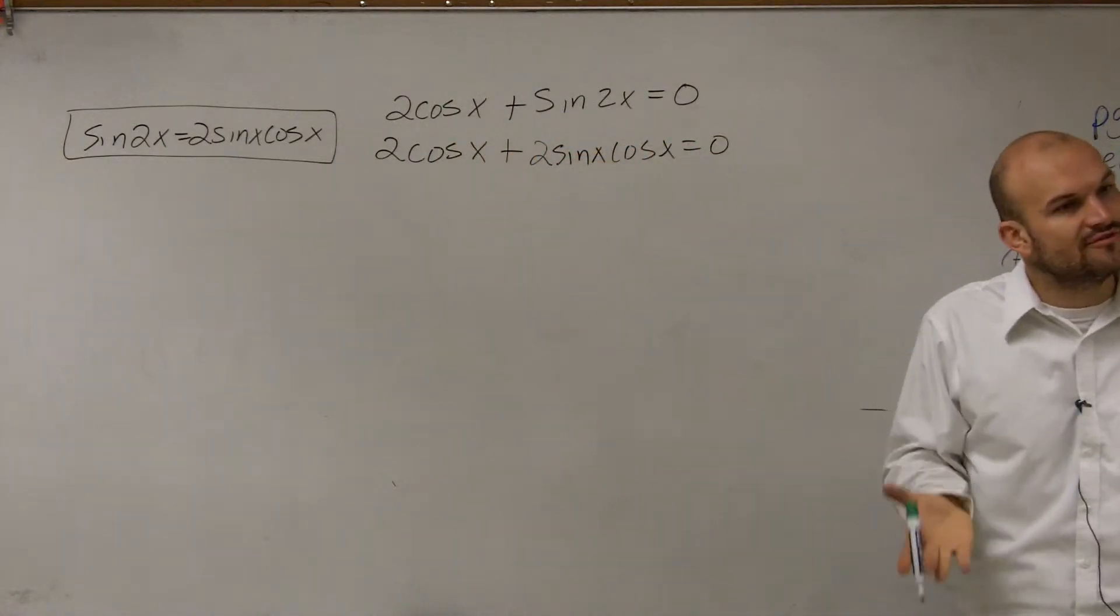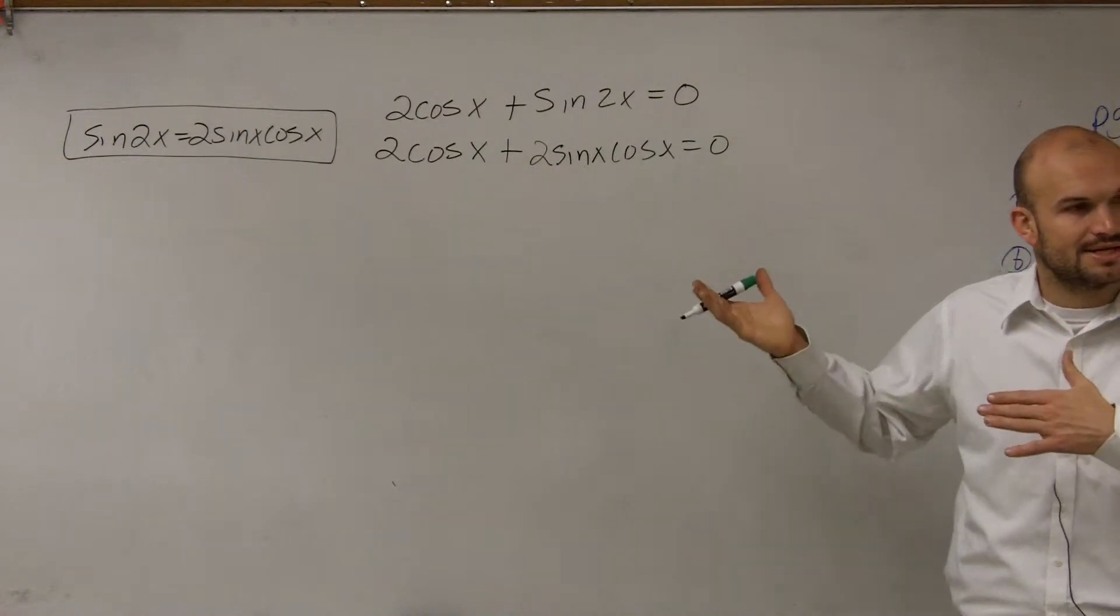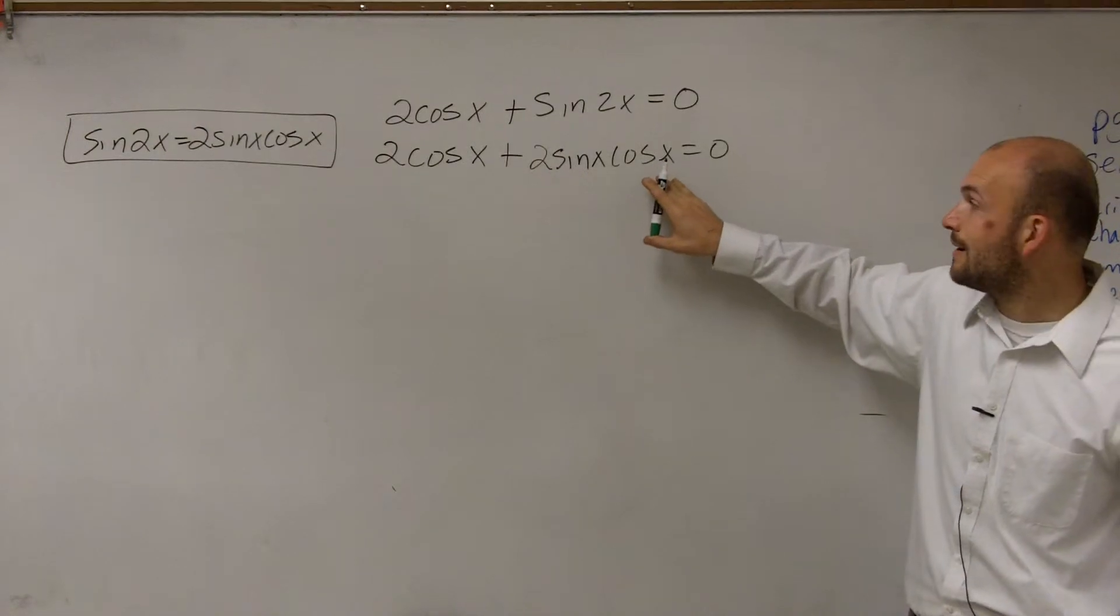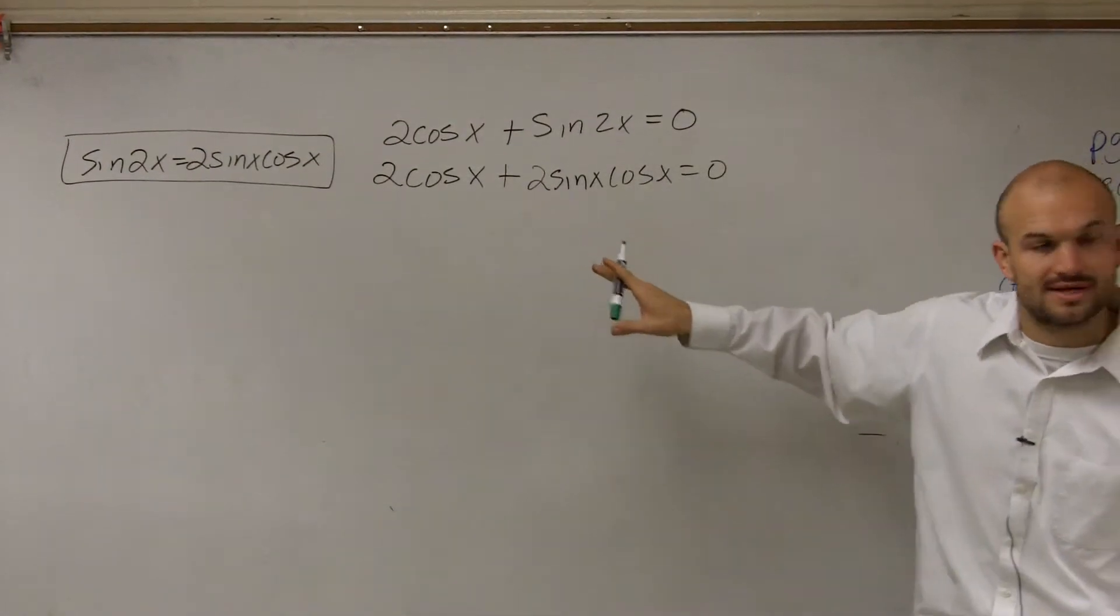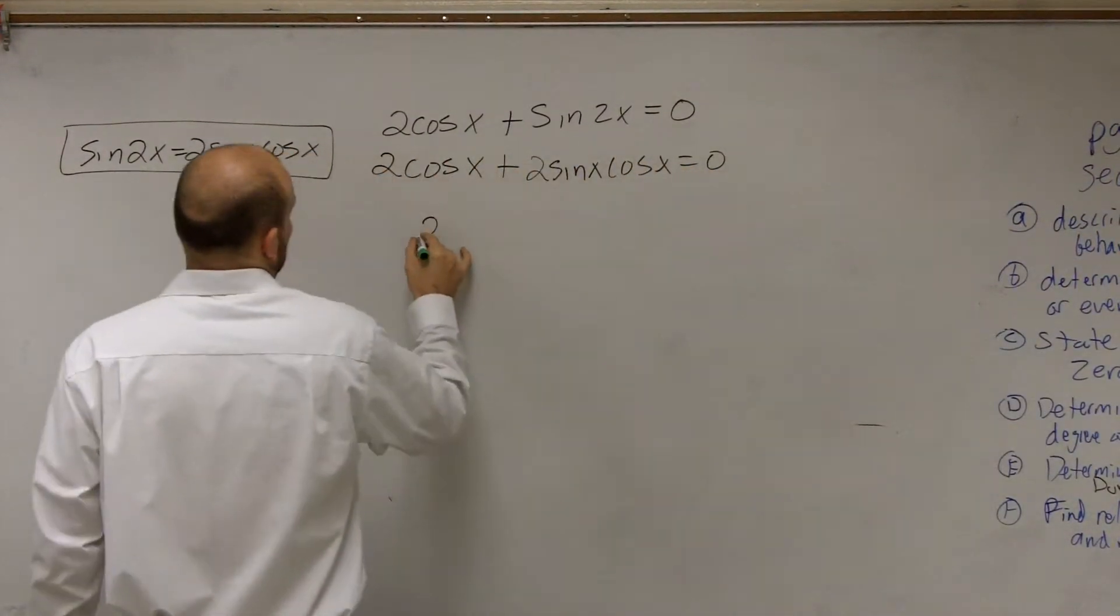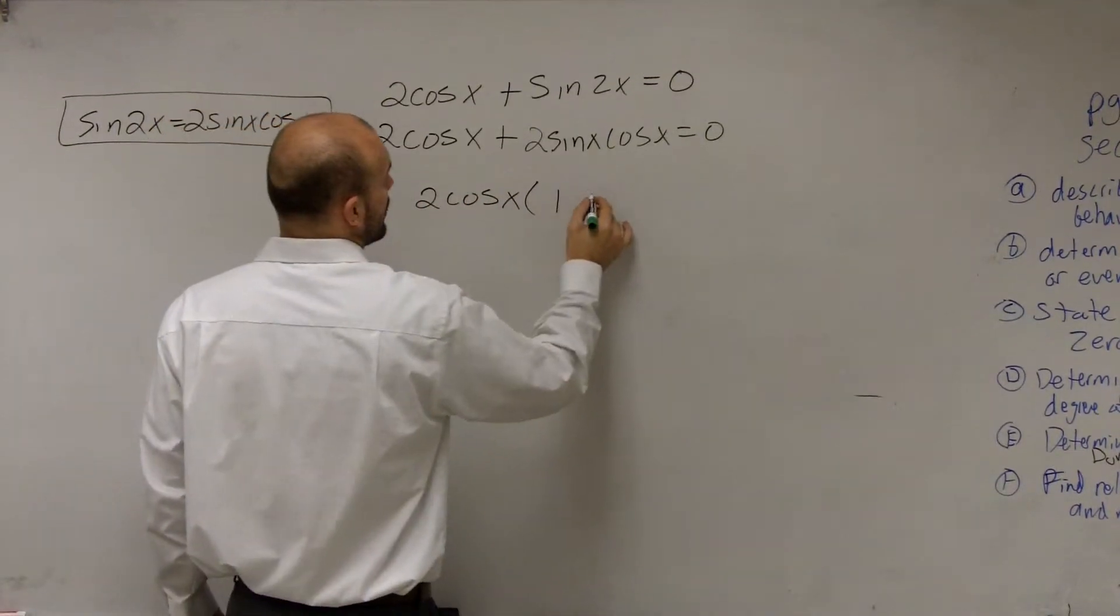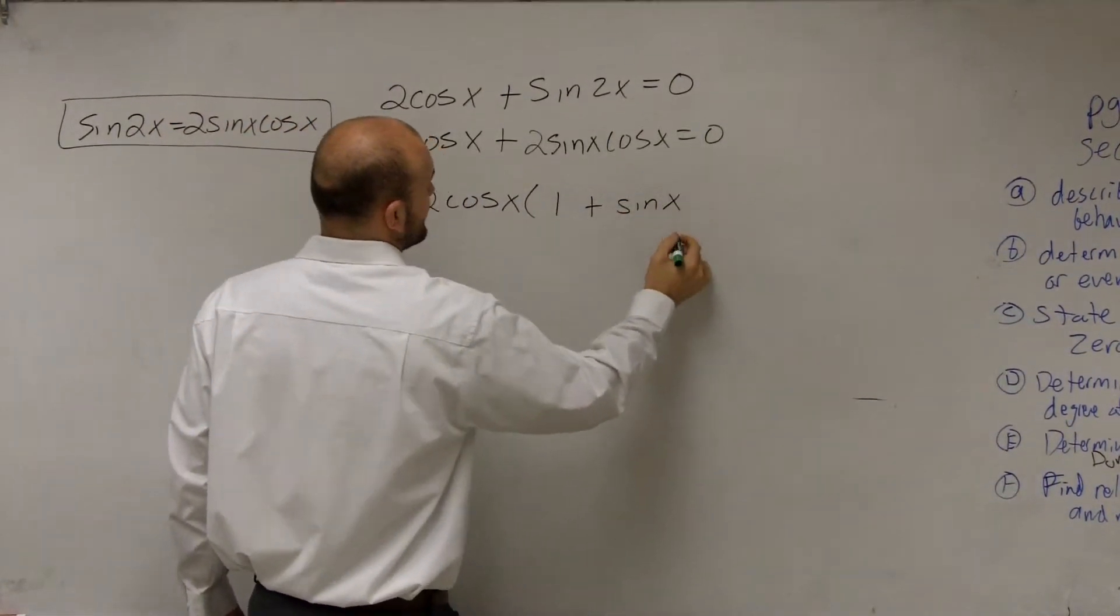So all I'm really doing is taking a formula and then applying it to my equation because now I look at this and I say, if I look at this equation, now I can factor out a 2 cosine of x and that's going to leave me with a 1 plus sine of x.